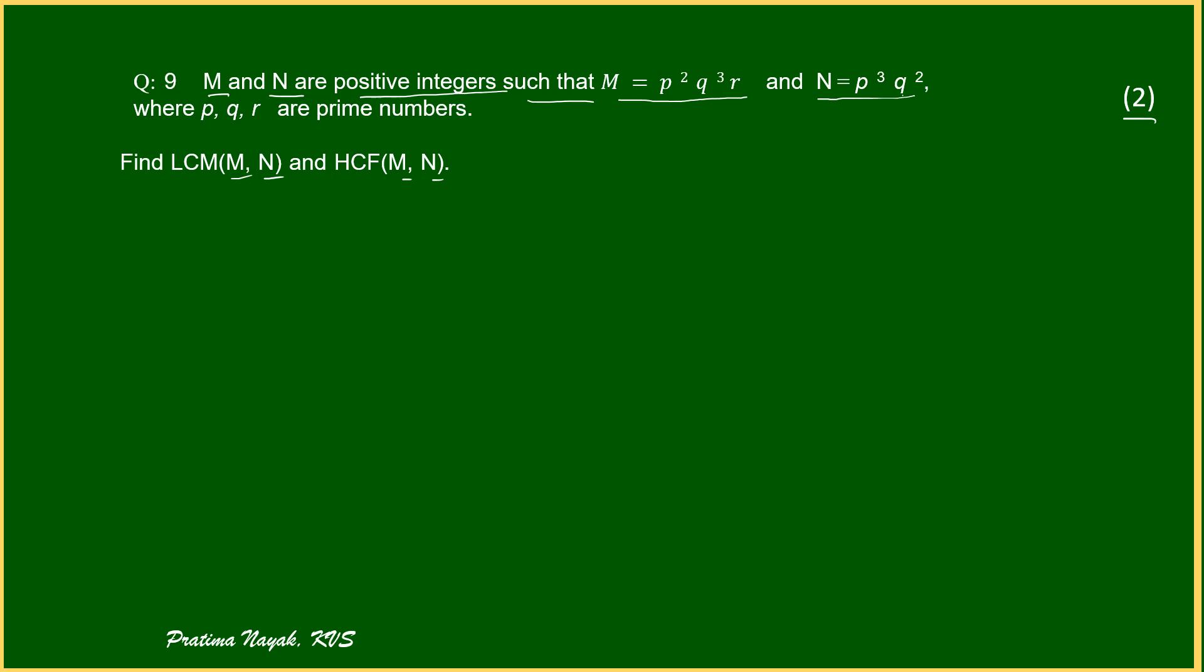First I am going for HCF because writing HCF is very easy. I will write m in prime factorization form. It will be p how many times? Two times. q how many times? Three times. Then r once. Now, coming to n. p how many times? Three times. q how many times? Two times.